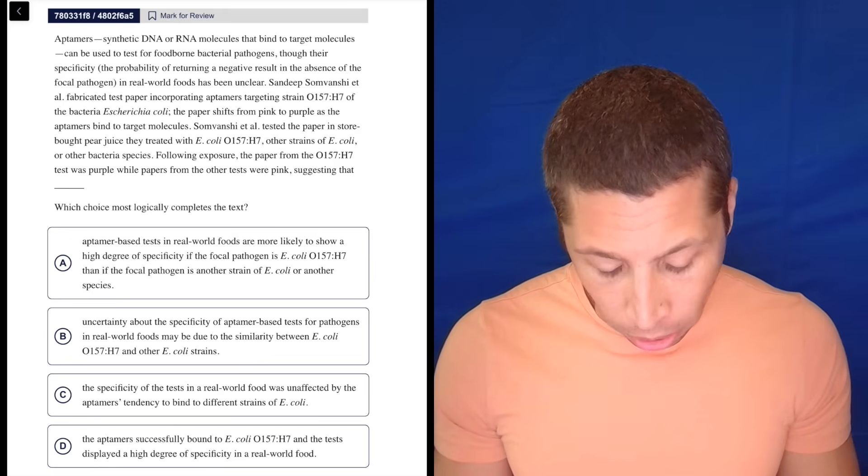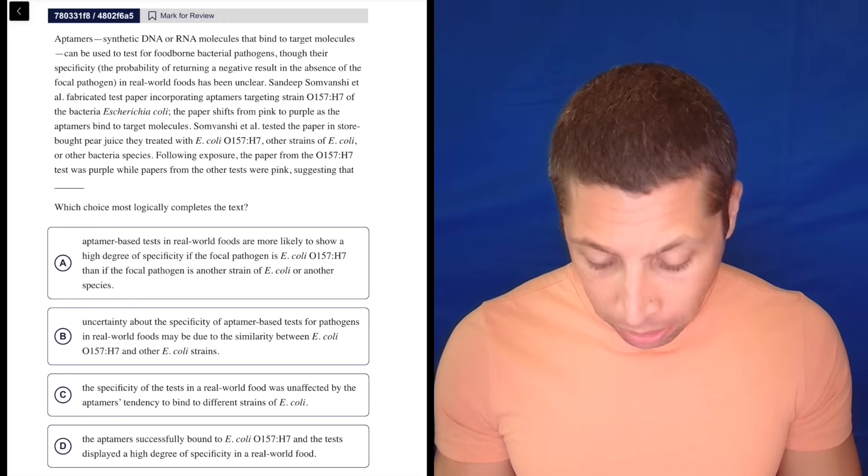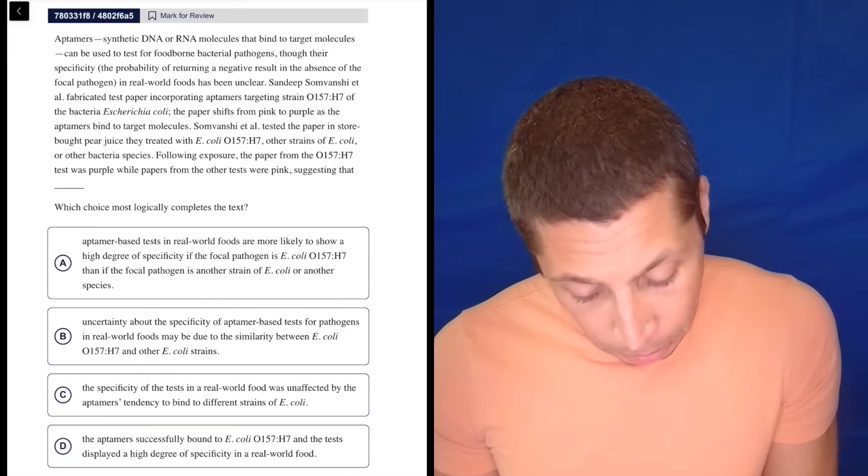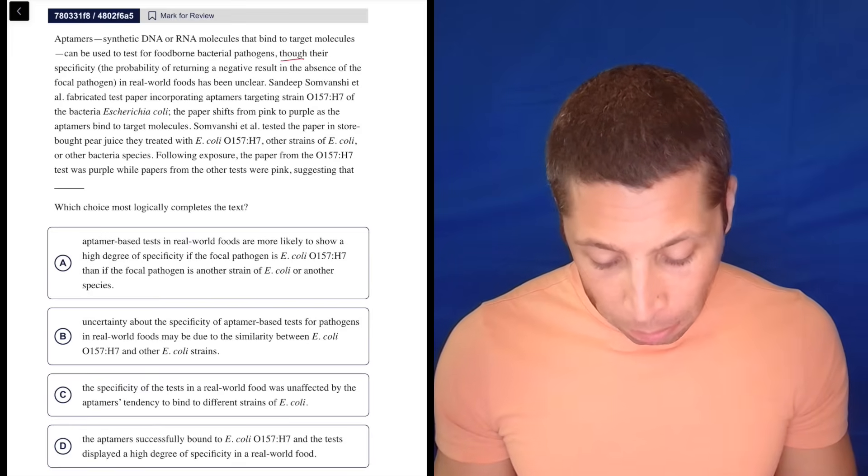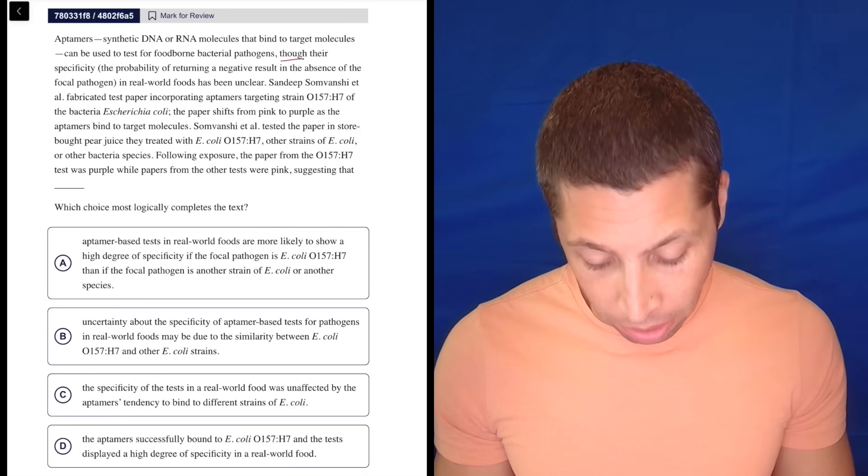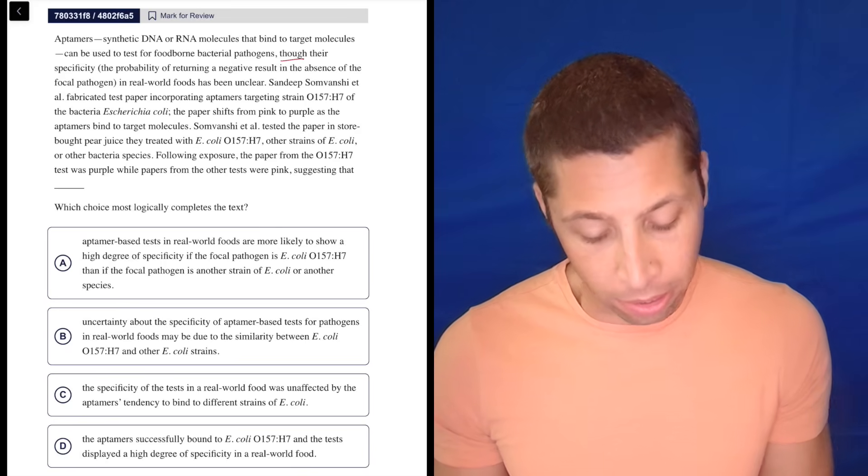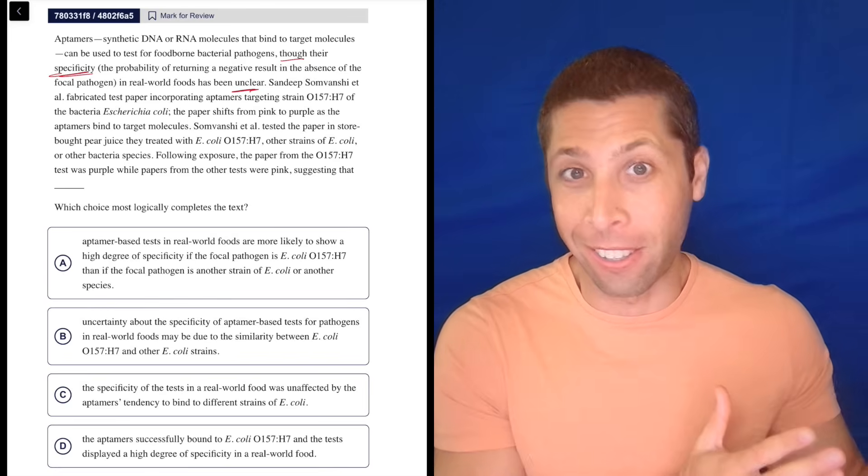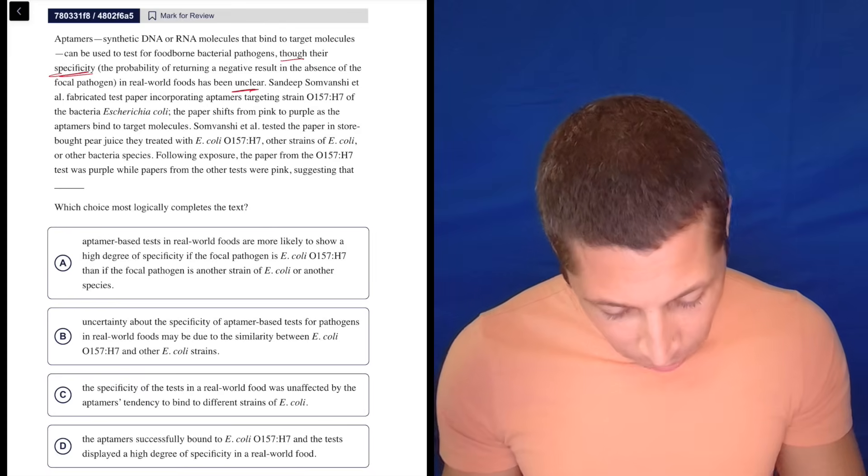Aptamers, synthetic DNA or RNA molecules that bind to target molecules, can be used to test for foodborne bacterial pathogens, though their specificity - the probability of returning a negative result in the absence of the focal pathogen in real-world foods - has been unclear. Okay, specificity unclear. I don't know what that means. It's ironic that specificity is unclear, but whatever, we'll just move on.